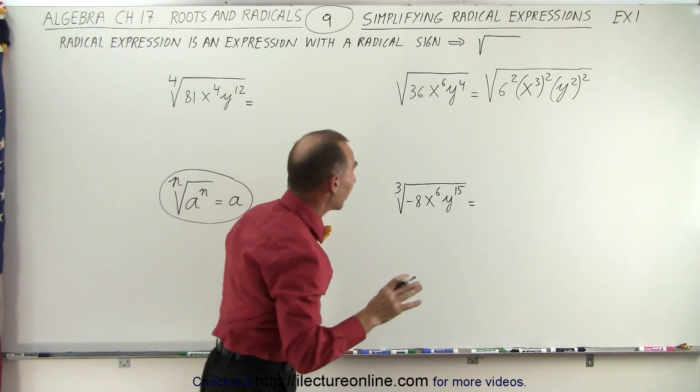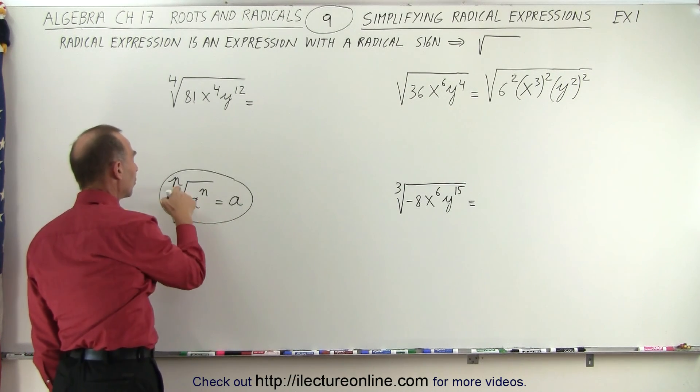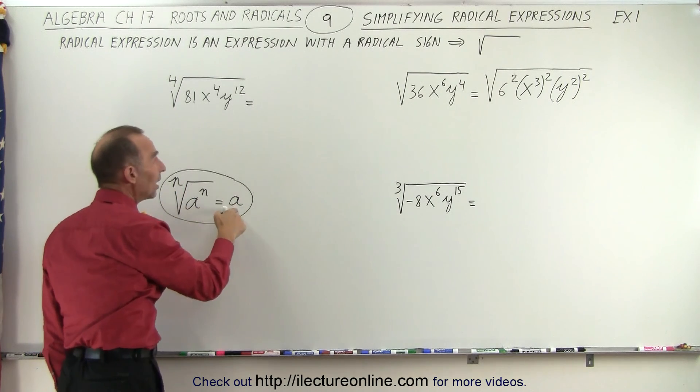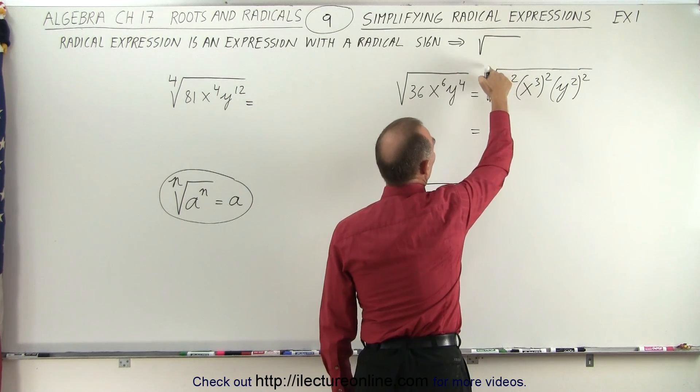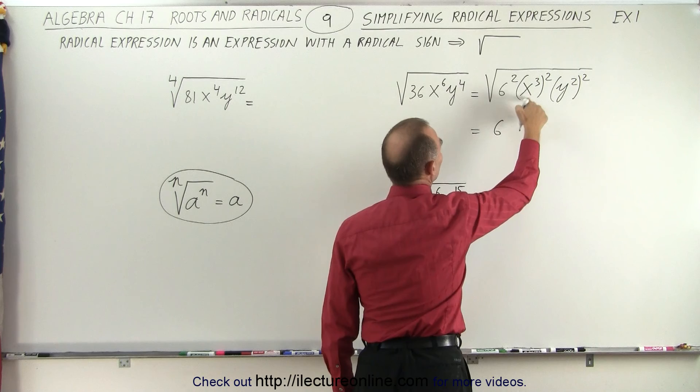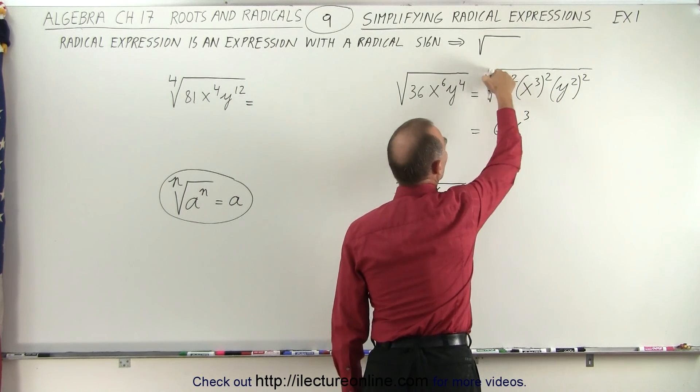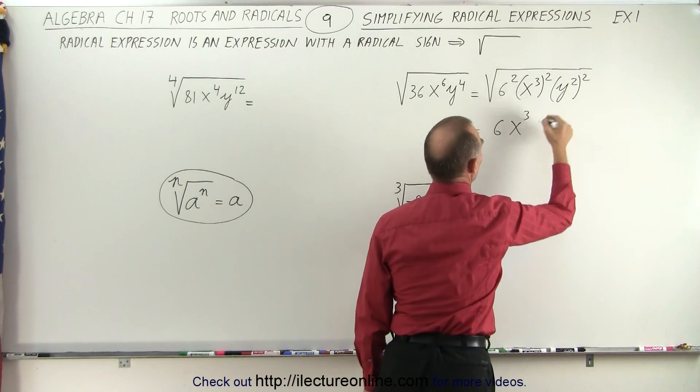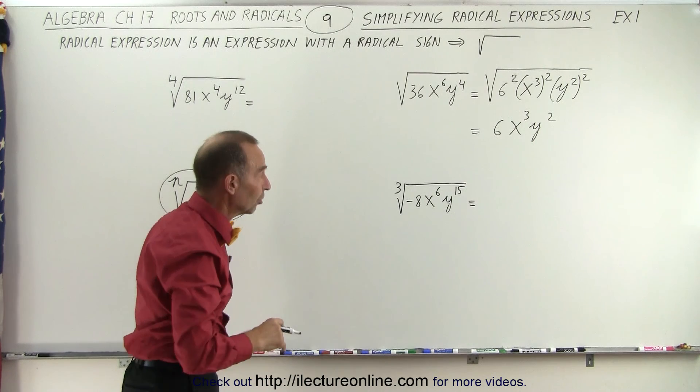Now, once we've written like that, we can then go back to this. And we can then say that the nth root of a to the n power equals a. So, using the same principle, this would then become equal to the square root of 6 squared gives us 6. The square root of x to the third power squared gives us x to the third. And the square root of y squared to the second power gives us y squared. And that is how we simplify a radical expression.